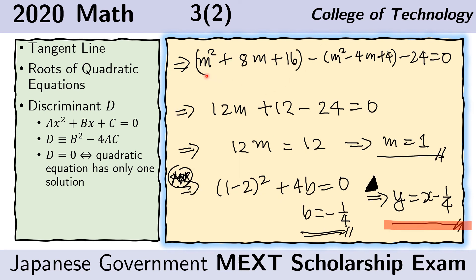Expanding the terms in the previous slide, we obtain this equation. Again, we can cancel the m's and now we have a linear equation which can easily be solved for m. We see that m equals 1.